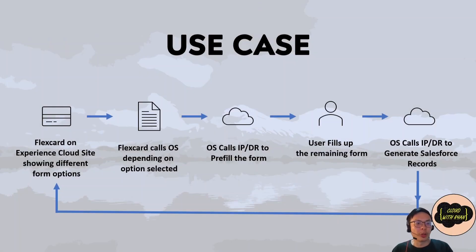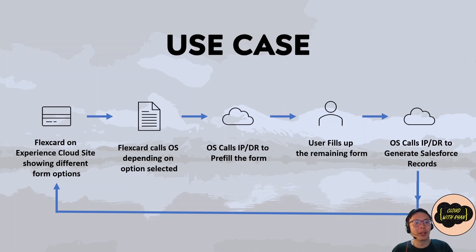So when would you use OmniStudio? A very common use case would be an online application form. For example, imagine you are shopping for an insurance plan for your car. On the website, you would have multiple insurance options, and depending on which option you selected, a different application form would appear. The form would pre-populate your personal details if you are logged in, and ask questions about your car model, brand, etc. It would then submit the form and send you a confirmation email. Inside Salesforce, it would create or update account and contact records, generate an application record to store the form details, and create a case for the insurance agent to follow up with the applicant.